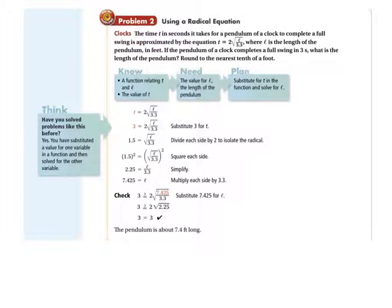Just like anything, we can have story problems. Clocks. The time t in seconds it takes for a pendulum of a clock to complete a full swing is approximated by the equation t equals 2 times the square root of l over 3.3, where l is the length of the pendulum in feet. If the pendulum of a clock completes a full swing in 3 seconds, what is the length of the pendulum? Round to the nearest tenth of a foot.